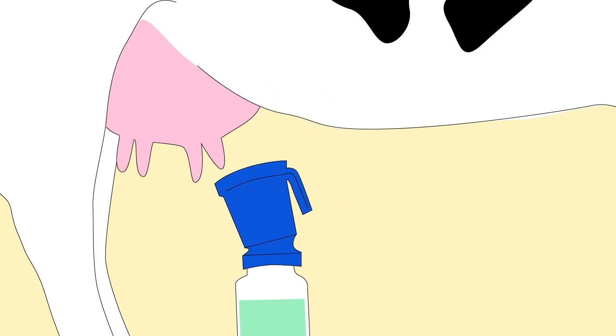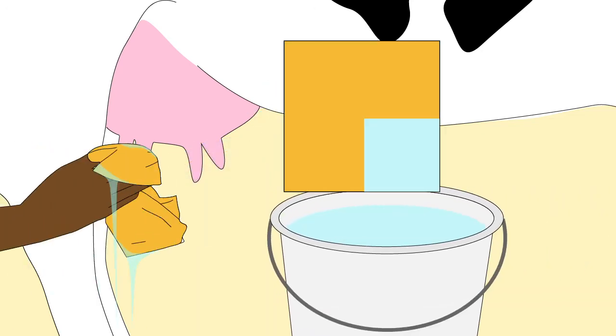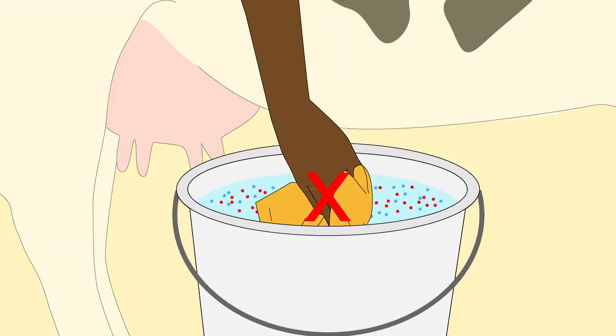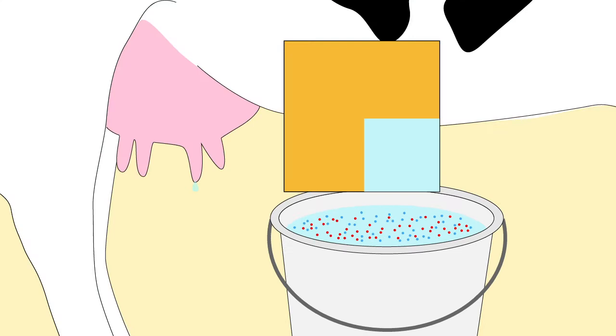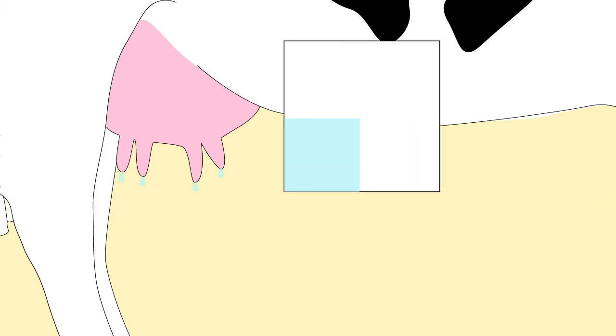Either use a pre-dip to clean the teat or four corners of a damp cloth should be used to wash the four quarters. The cloth should not be returned to the bucket. A dry cloth or paper should be used to dry the quarters.